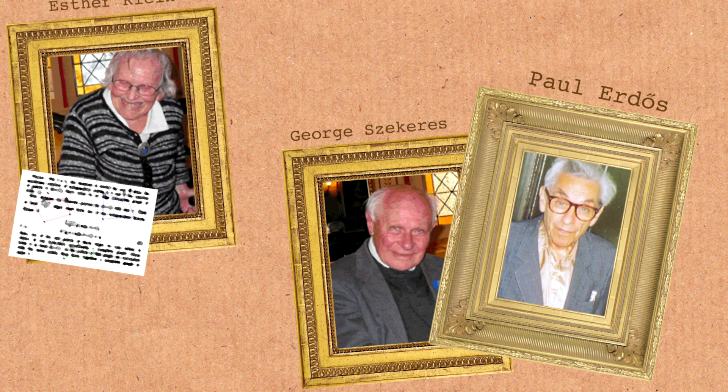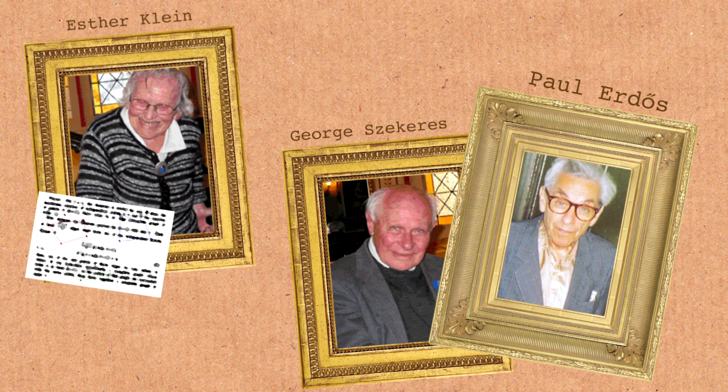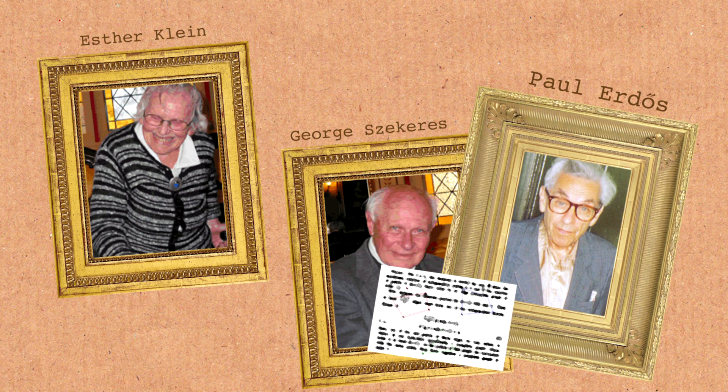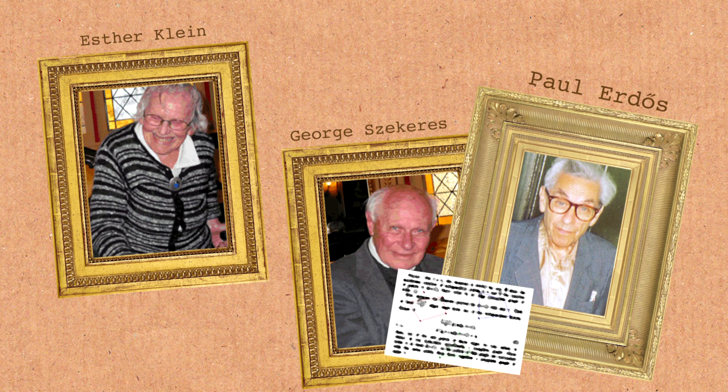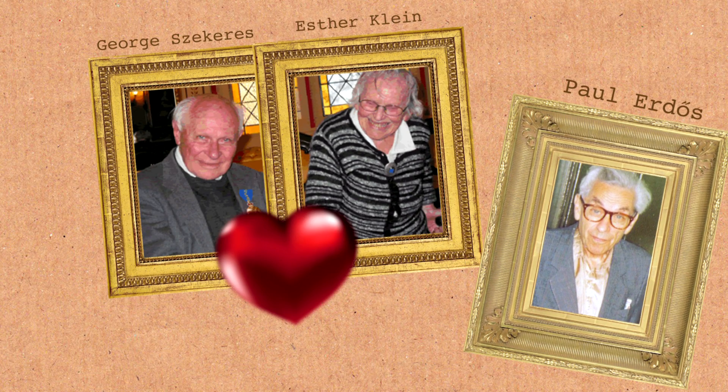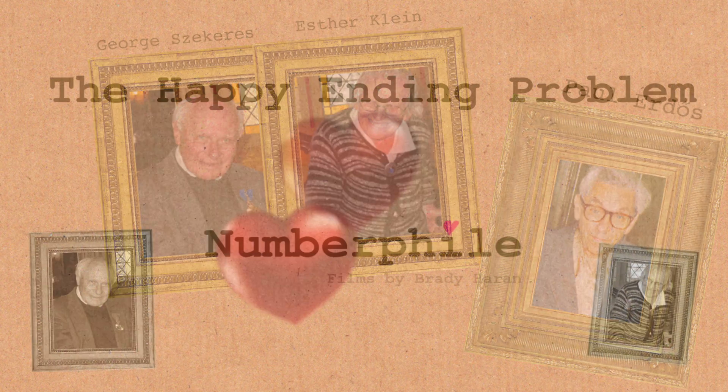This theorem actually has a name, it was called the Happy Ending Theorem. What happened was that a woman mathematician, Esther Klein, picked up the problem when she was abroad and brought it back and Erdős and Szekeres thought about it. It turns out that shortly thereafter, Szekeres and Esther Klein got married, and they were married until in their 90s.